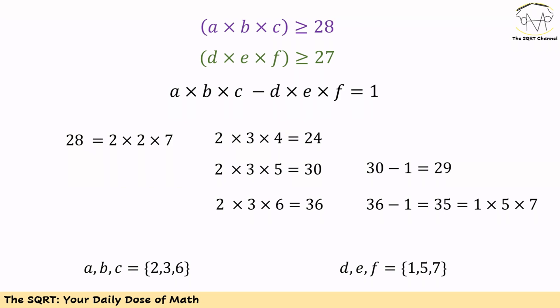Let's start with 2 for A. B cannot be 2 anymore because they are distinct, so we can use 3 for B. And then we need to use something like 4 for C. If we do this, then A times B times C is going to be 24, which is less than 28 and not acceptable.